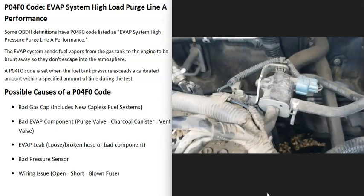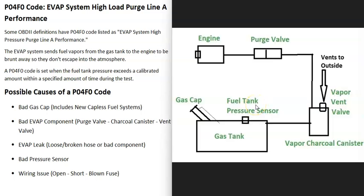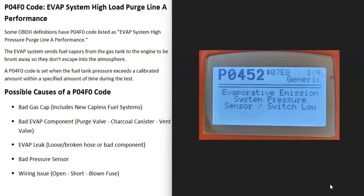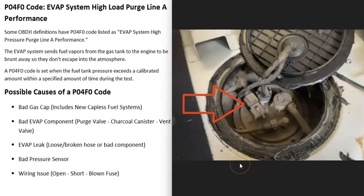Another possible cause is a bad fuel tank pressure sensor, sometimes called an EVAP pressure sensor. The computer gets information from this sensor, and if it's sending out wrong information, the computer might think there's a problem even if there isn't one. Usually, if there's an issue with that sensor, you'll get another code — for example, a P0452 code, evaporative emission system pressure sensor switch low.